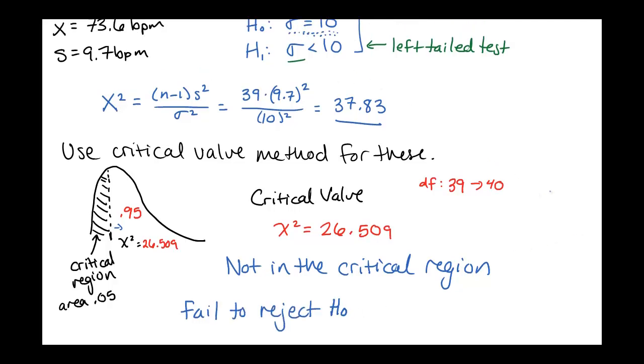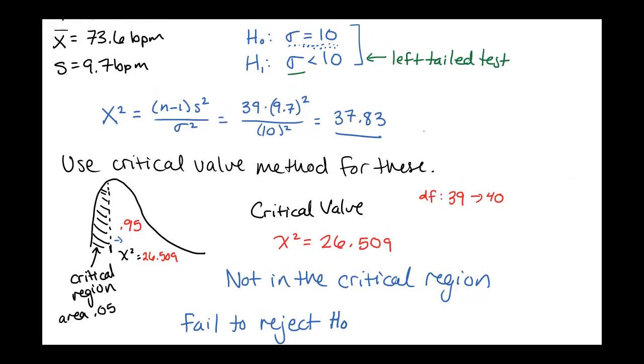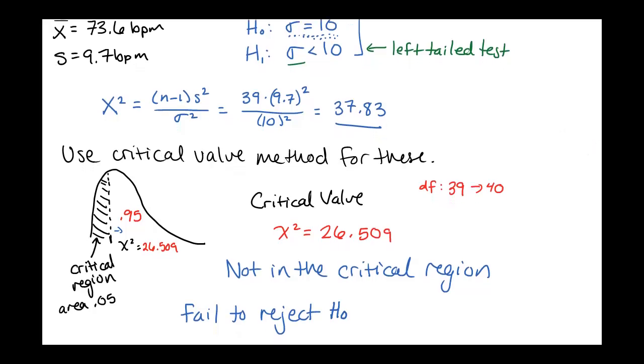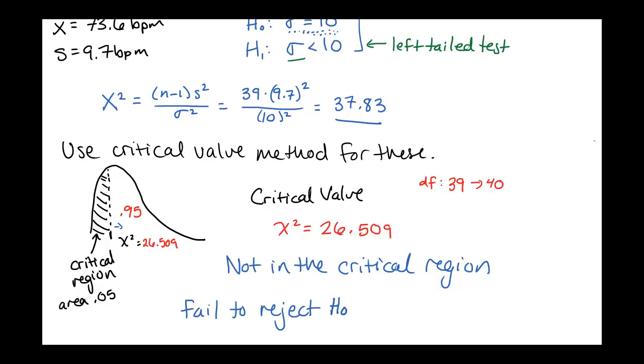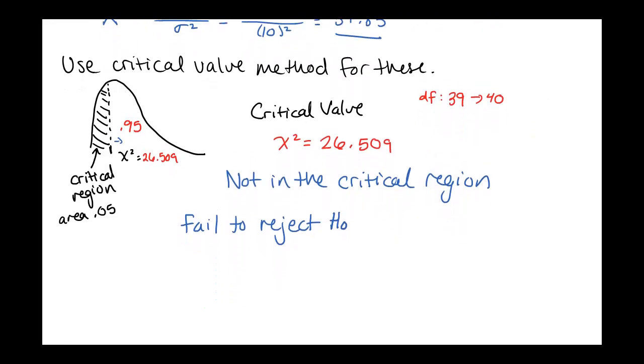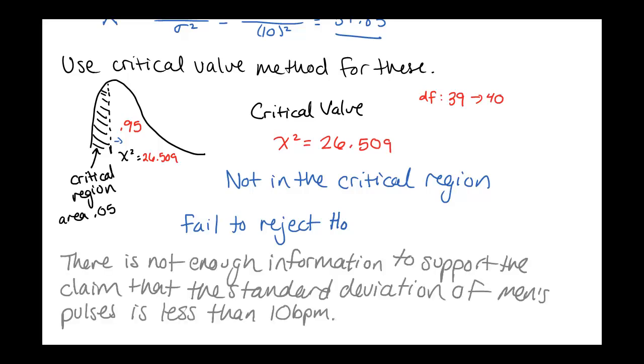So our conclusion here is fail to reject H0. If we put this in the context of this problem, we're failing to reject the null hypothesis, which means that there's not enough information to say that our alternative hypothesis is true. So we would write this out as there is not enough information to support the claim that the standard deviation of men's pulses is less than 10 beats per minute.